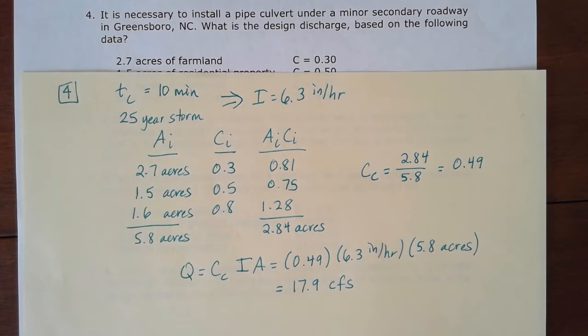So we're going to call that 17.9 cubic feet per second for answer for number 4. And if your intensity is a little different, you'll have a little bit different total discharge, and that is fine. But it should be in that ballpark number.